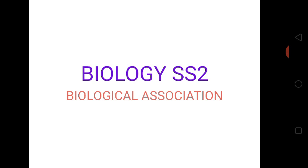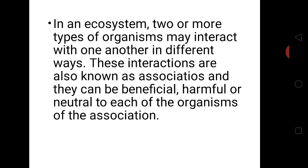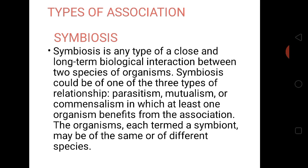We are going to look at biological association. In an ecosystem, two or more types of organisms may interact with one another in different ways. These interactions are also known as associations and they can be beneficial, harmful or neutral to each of the organisms of the association. This type of association is what we refer to as biological association.